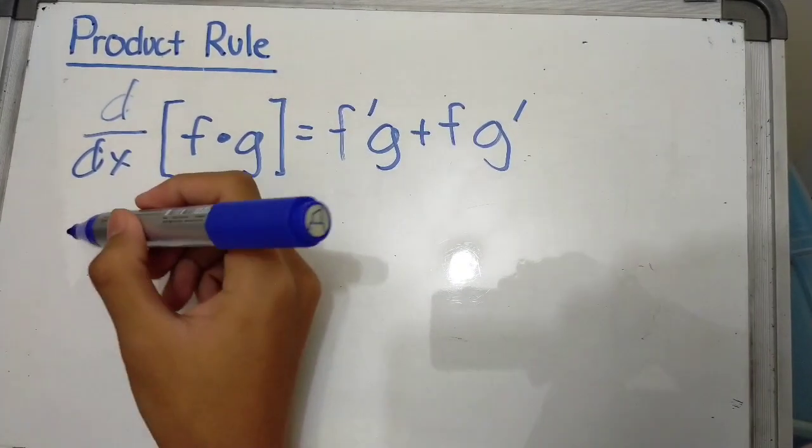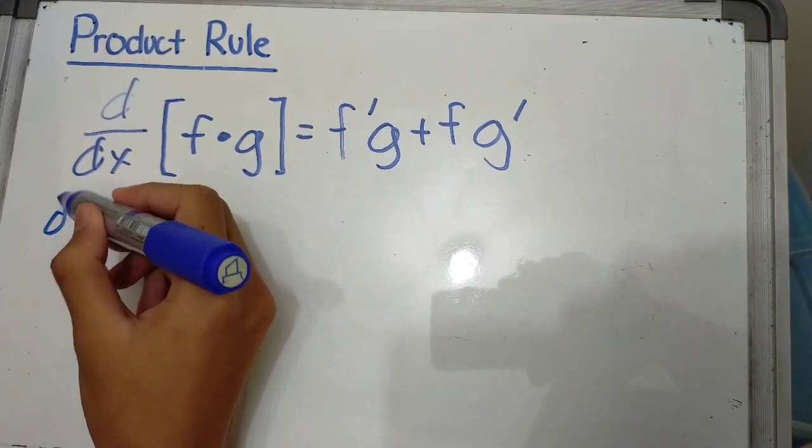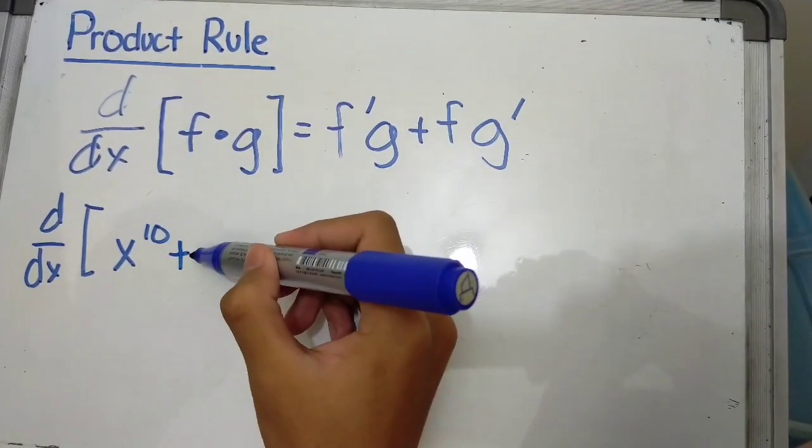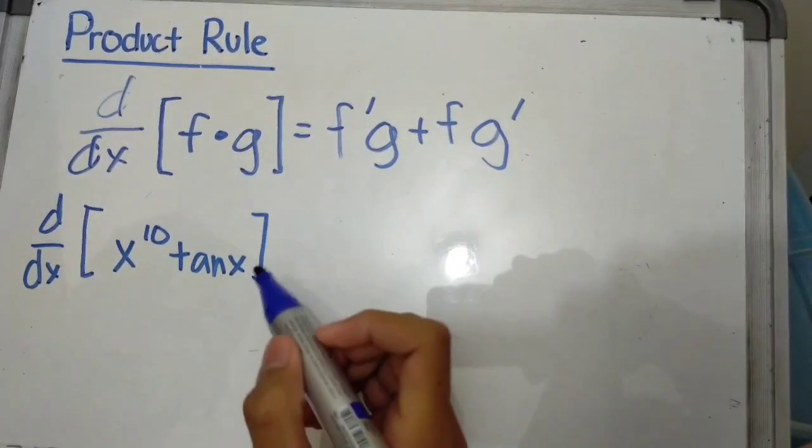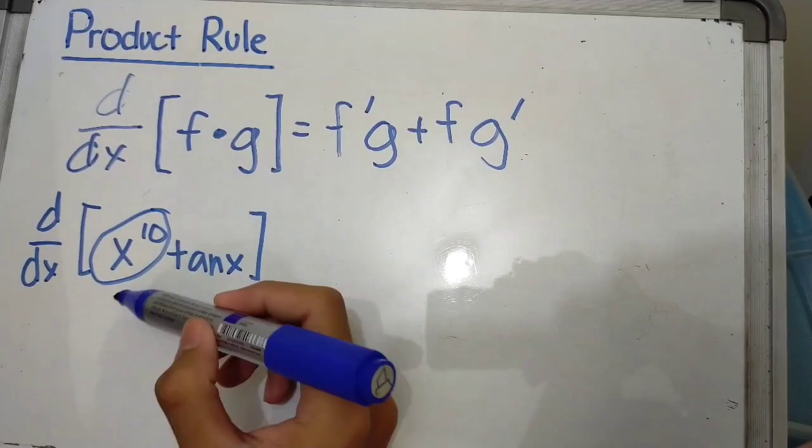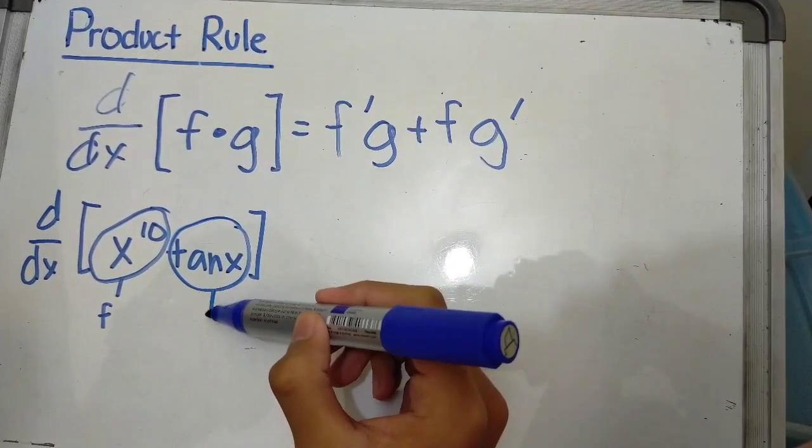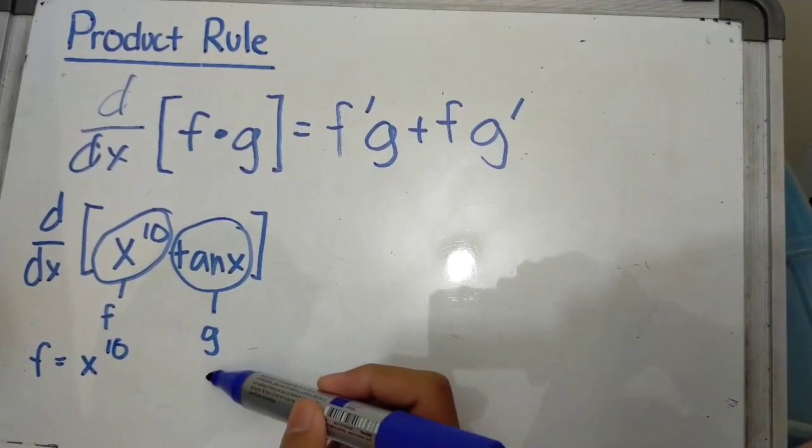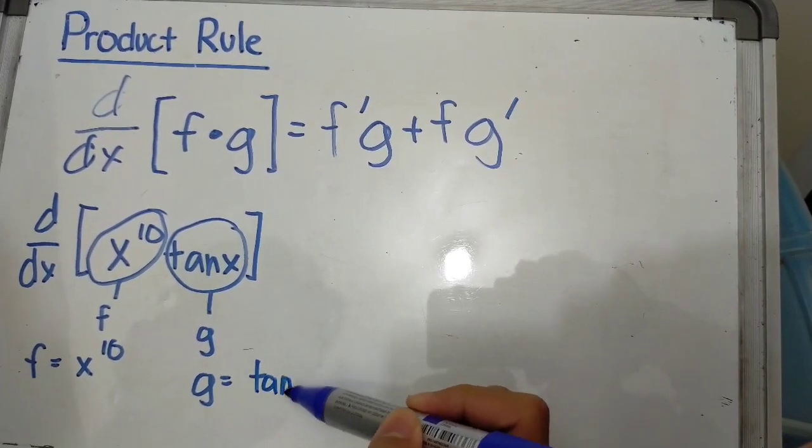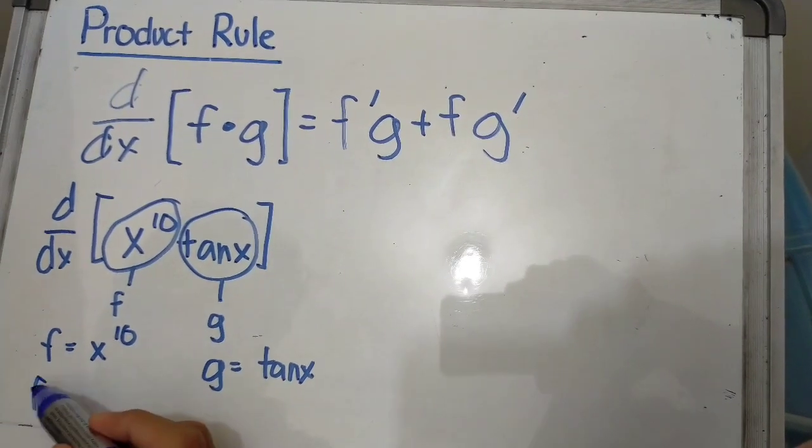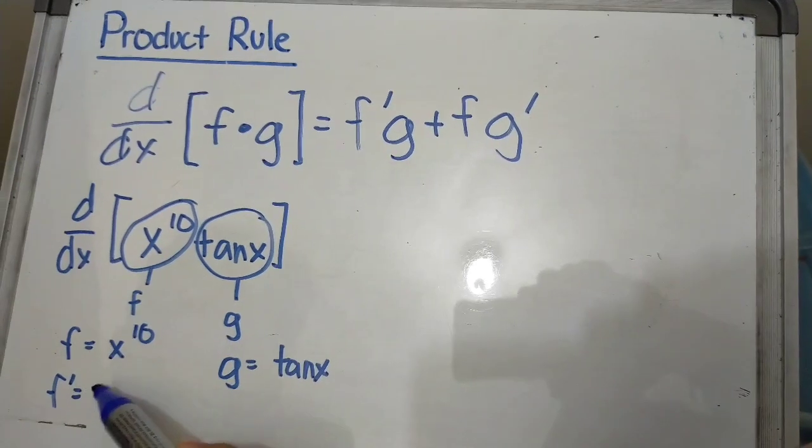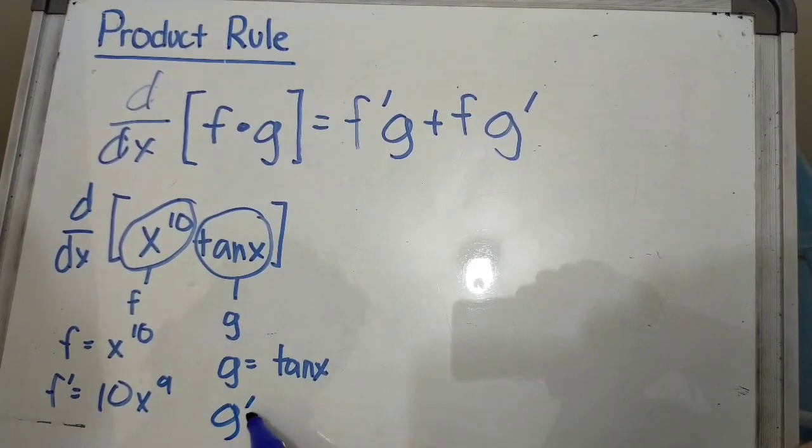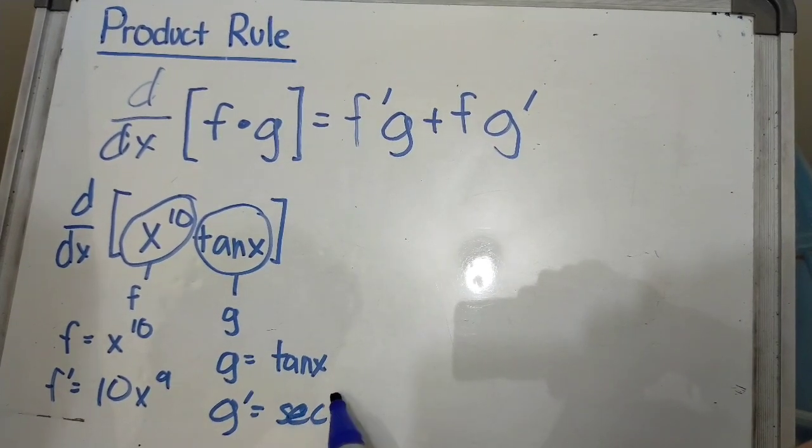For the first example: x^10 times tan x. The f here is x^10 and g here is tan x. Let us find their derivatives: f' equals 10x^9 and g' equals sec²x.